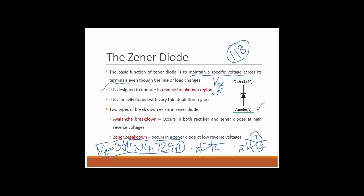The reason for that is a Zener diode is heavily doped with a very, very thin depletion region. Because the doping concentration is much higher than a normal diode, it is able to withstand very large voltages compared to a normal diode.